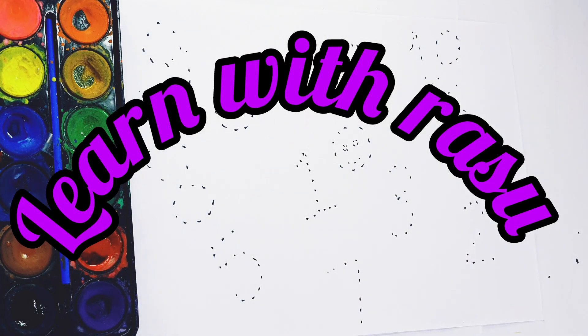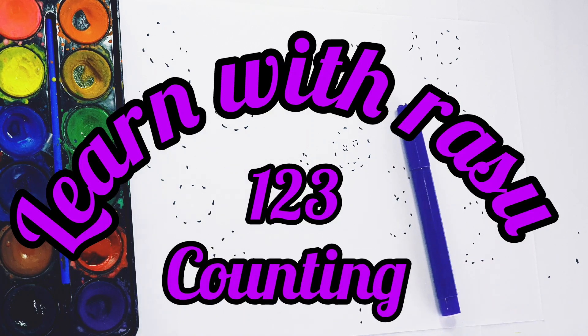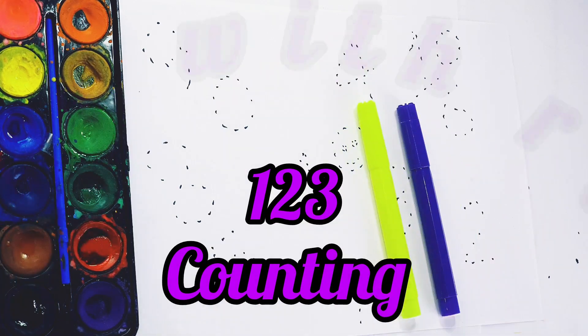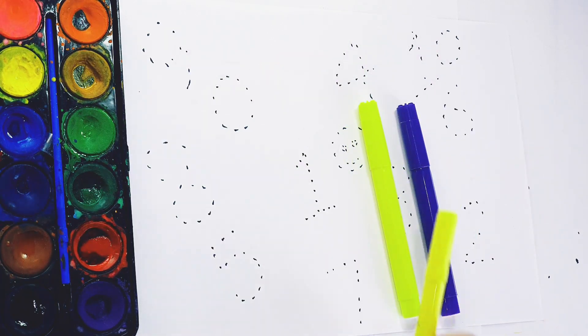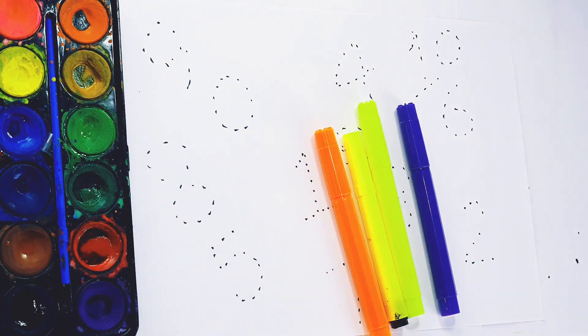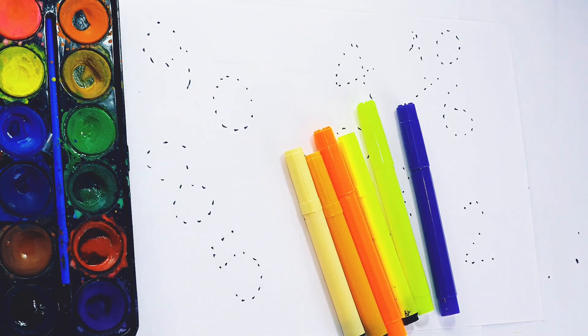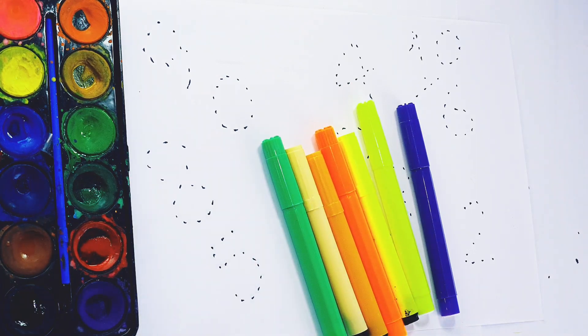Hello kids, welcome to my channel. Today we are going to learn 1-2-3 counting. Purple color, neon color, yellow color, orange color, light orange color, skin color, light green color.